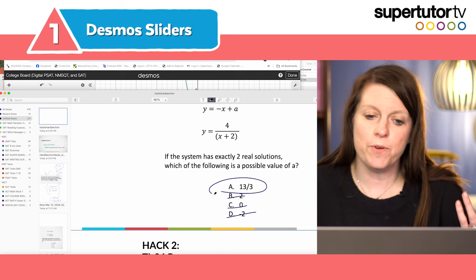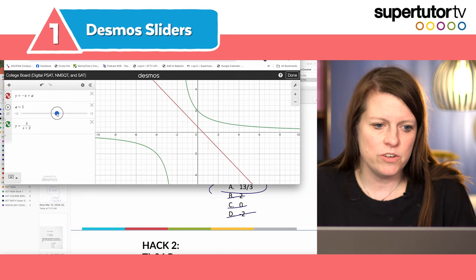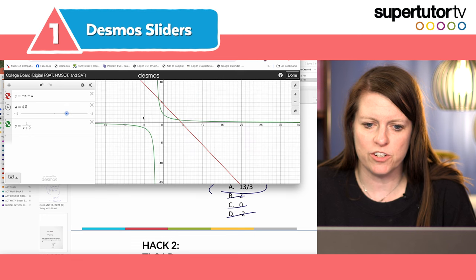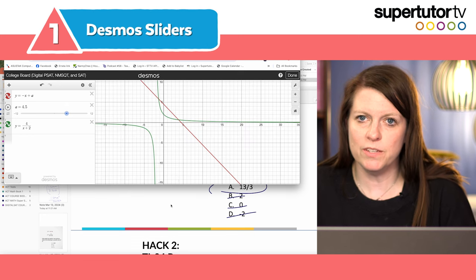Thirteen thirds is four and one third. That's gonna be good. I can even go up here and just double check it. Four ish. Yeah four to five. We're all good. There's gonna be two intersection points there. Cool. Desmos sliders. Check them out.